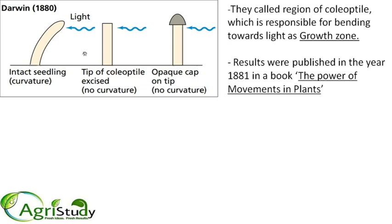Before entering the subject, I will explain how bending due to auxin takes place. When light is exposed, in normal conditions the auxin is uniformly distributed. But when blue light enters, auxin inactivation or auxin breakdown takes place on the light-exposed side, so that part loses auxin. As that side loses auxin, accumulation of auxin on the dark side increases, and bending towards the light side takes place. So inactivation of auxin on the light side and accumulation on the dark side leads to the bending of the coleoptile towards light.